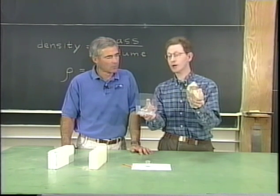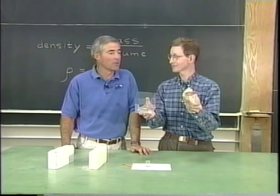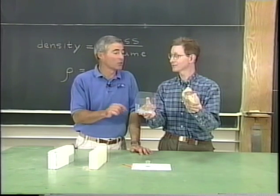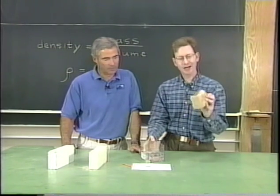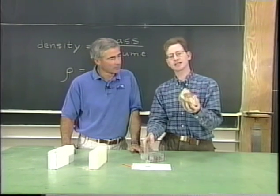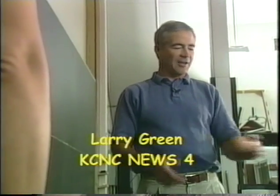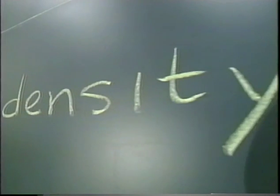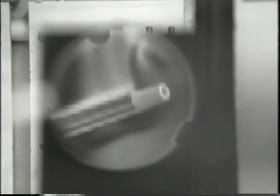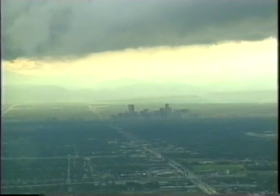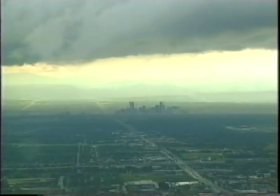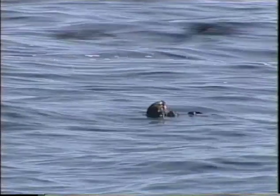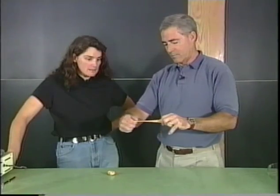Here's a rock that has the same volume as a pound of water, but the rock weighs two and a half pounds — that would mean it has a density of 2.5. With the help of CU scientist Dr. Alex Weaver and Denver News 4 weatherman Larry Green, we'll explain concepts such as density, temperature, and air pressure, and how these affect our weather, our oceans, the sun, and even silly putty.